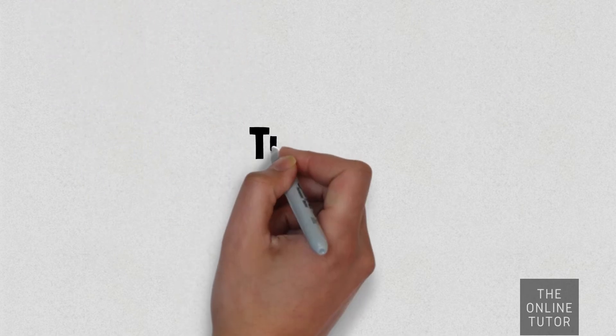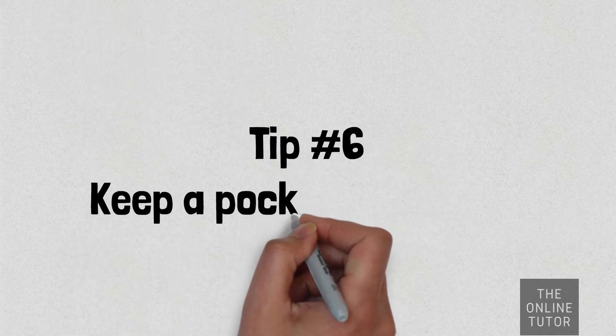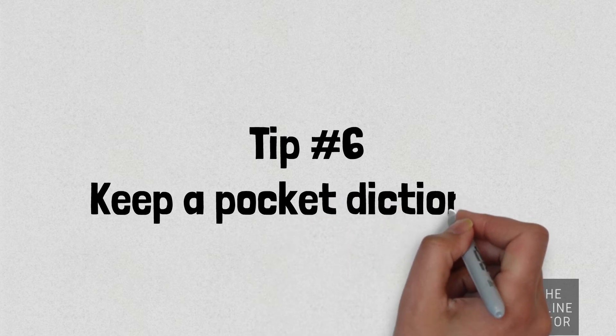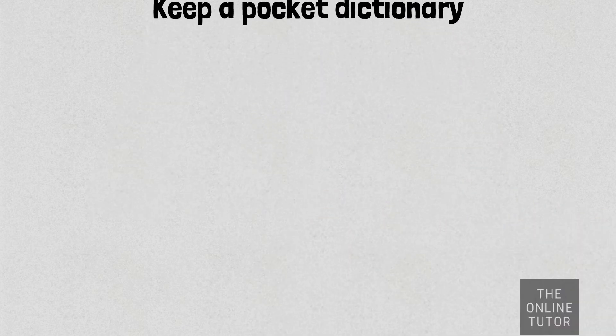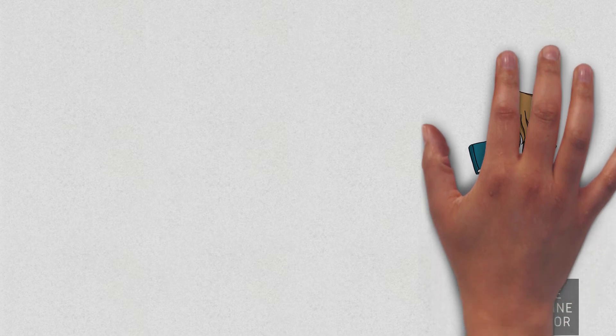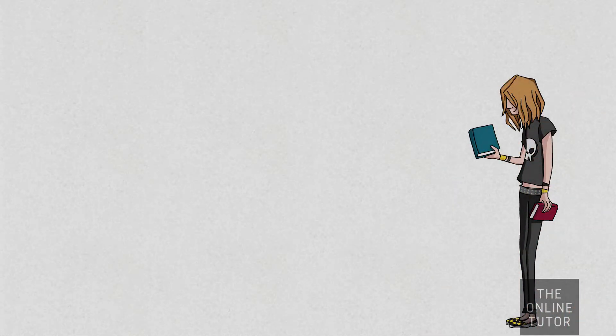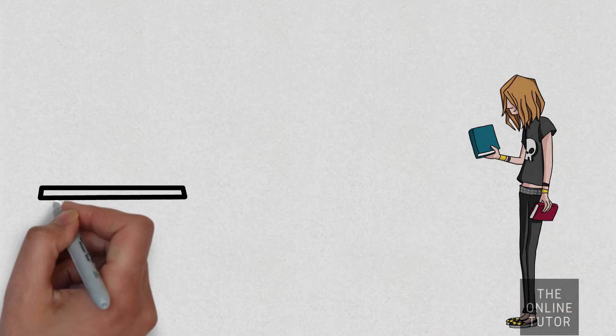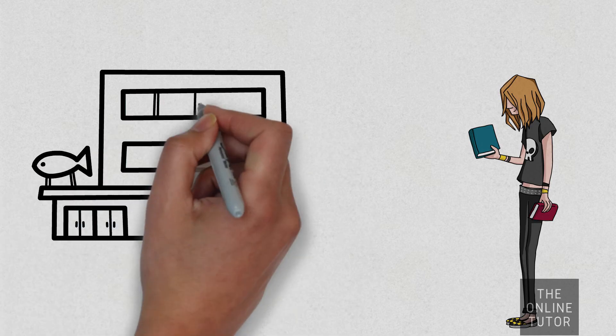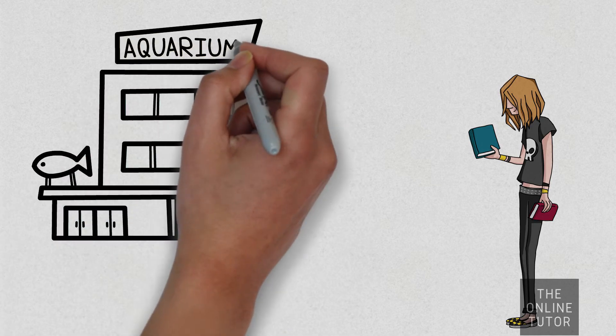Tip number six: keep a pocket dictionary. This can prove very useful if your phone battery is low or if the translator app is down. It would be wise to have a dictionary with the translations for the language.